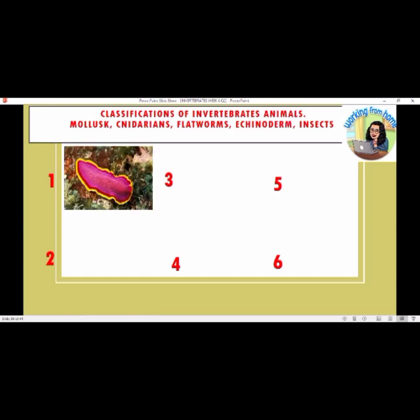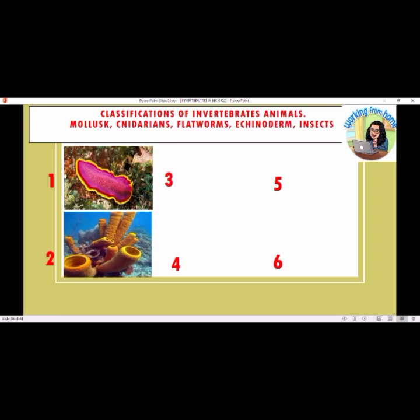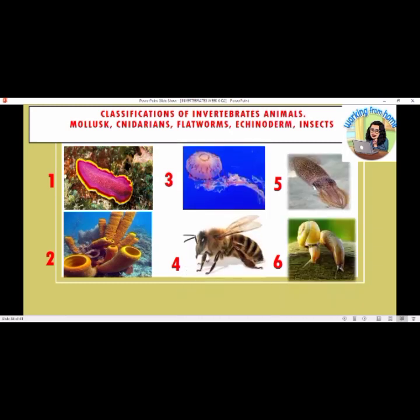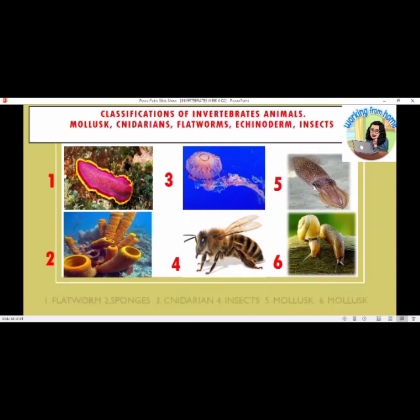Classification of invertebrate animals — mollusks, cnidarians, flatworms, echinoderms, insects. Try to identify. These are the answers — Number 1: flatworm; Number 2: sponges; Number 3: cnidarian; Number 4: insects; Number 5: mollusks; Number 6: mollusks.